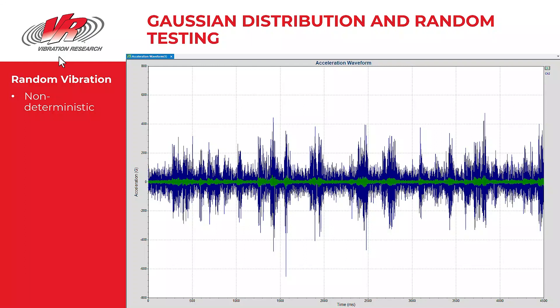One type of vibration testing is random testing. What makes random testing unique is that the amplitude of the random waveform at a specific time cannot be predicted. We say random vibration is non-deterministic.